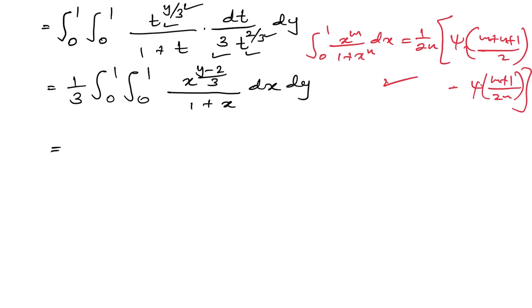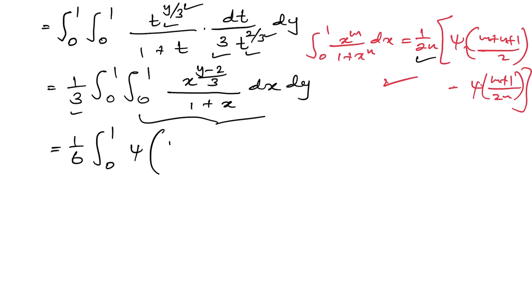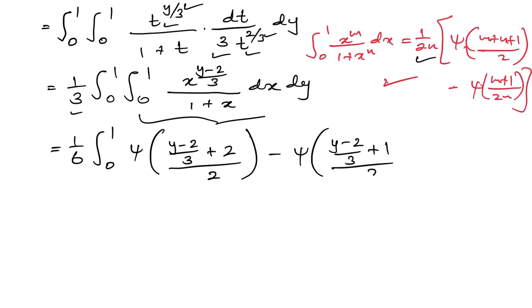Applying this formula with n equal to 1, the 1/(2n) factor gives 1/2, and combined with the 1/3 outside we get 1/6. The integral from 0 to 1 then becomes (1/6) times the integral from 0 to 1 of [digamma of (m plus 2) minus digamma of (m plus 1)/2] dy, where m equals y/3 minus 2/3. Plugging in m, the arguments simplify to (y plus 4)/6 and (y plus 1)/6.